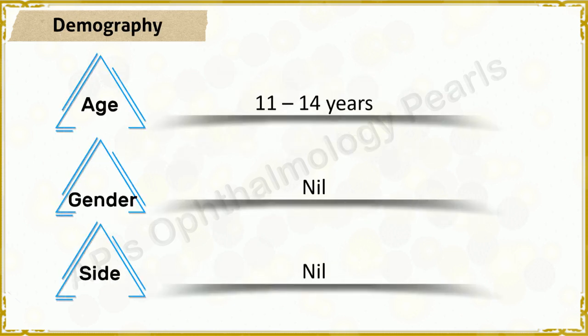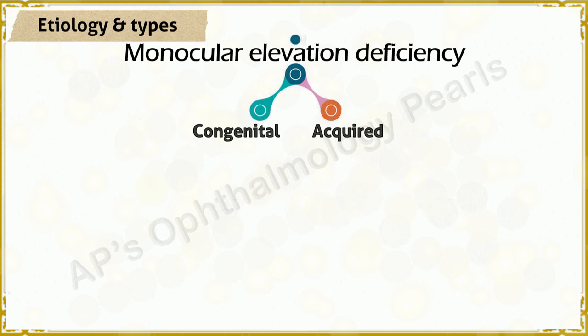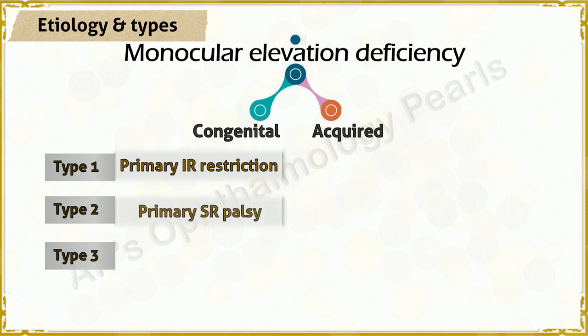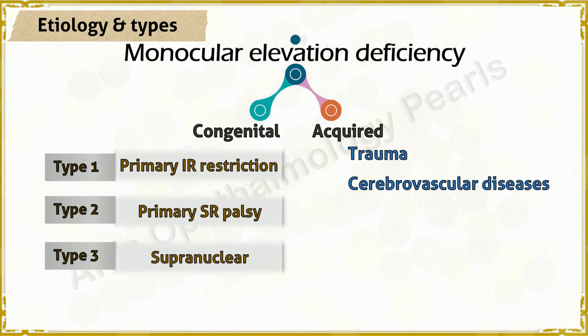Different studies have shown a mean age at presentation of the congenital variety at about 11 to 14 years, with no gender or obvious side preference. The congenital variety is of three types: Type 1 is due to primary inferior rectus restriction or fibrosis; Type 2 is due to primary superior rectus palsy; Type 3 is supranuclear in origin. Acquired cases are usually caused by trauma, cerebrovascular diseases like hypertension, thromboembolism, sarcoidosis, tertiary syphilis, or tumors such as pineocytomas, acoustic neuromas, and metastasis.